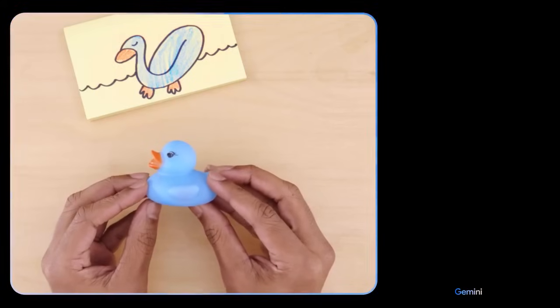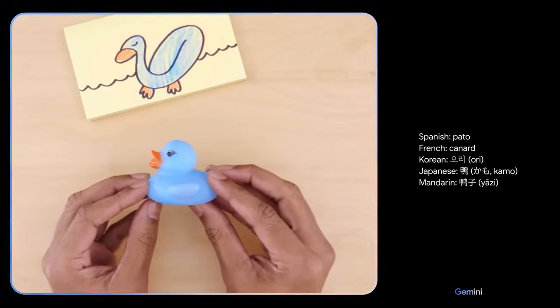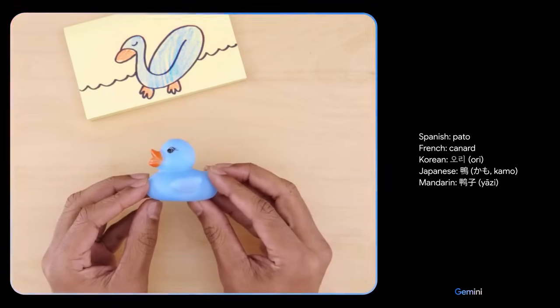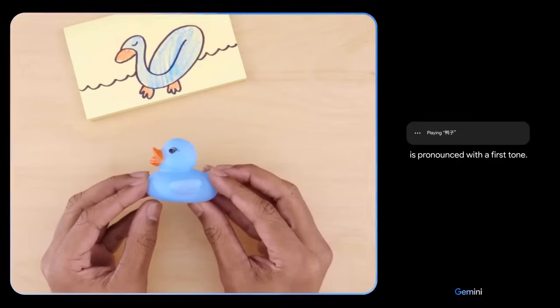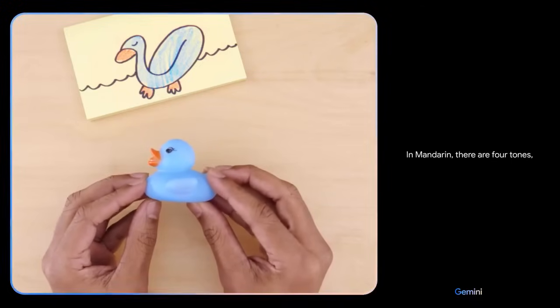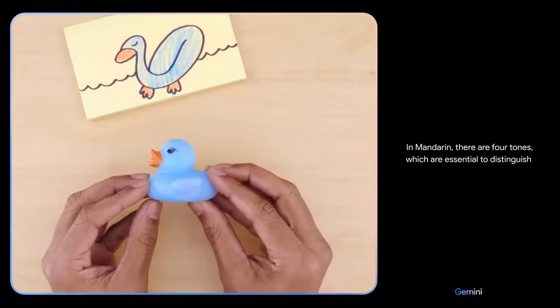Can you teach me how to say this in a different language and give me a few options? Can you explain how to pronounce the Mandarin one? Yā is pronounced with a first tone in Mandarin. There are four tones which are essential to distinguish the meaning of words. The first tone is a high level tone.